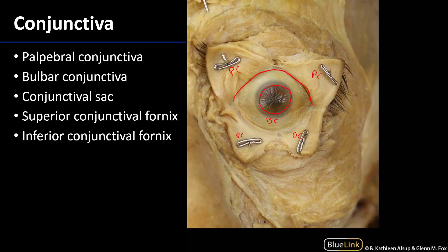These conjunctivae meet one another at the fornices — there is a superior fornix and an inferior fornix. If we were to re-approximate all of the portions of the palpebrae together, the eyelids would create a space between the palpebral and the bulbar conjunctiva, and that's what's known as the conjunctival sac. It is into this sac that lacrimal fluid, or tears, would flow and wash across the surface of the eye towards the lacrimal apparatus medially.